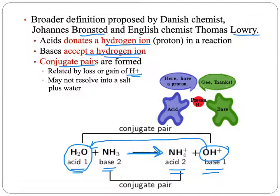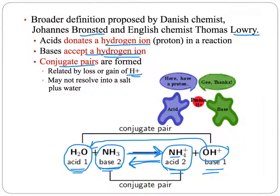So with Bronsted-Lowry conjugate pairs, the substance that serves as an acid in the forward reaction becomes a base in the reverse reaction, and the opposite is true. The substance ammonia, which serves as the base and accepts the hydrogen ion to become an ammonium ion, would give up the hydrogen ion and turn the ammonium back into ammonia if the reaction were reversed. So a substance that is an acid one way can be a base when the reaction is moving in the other direction.